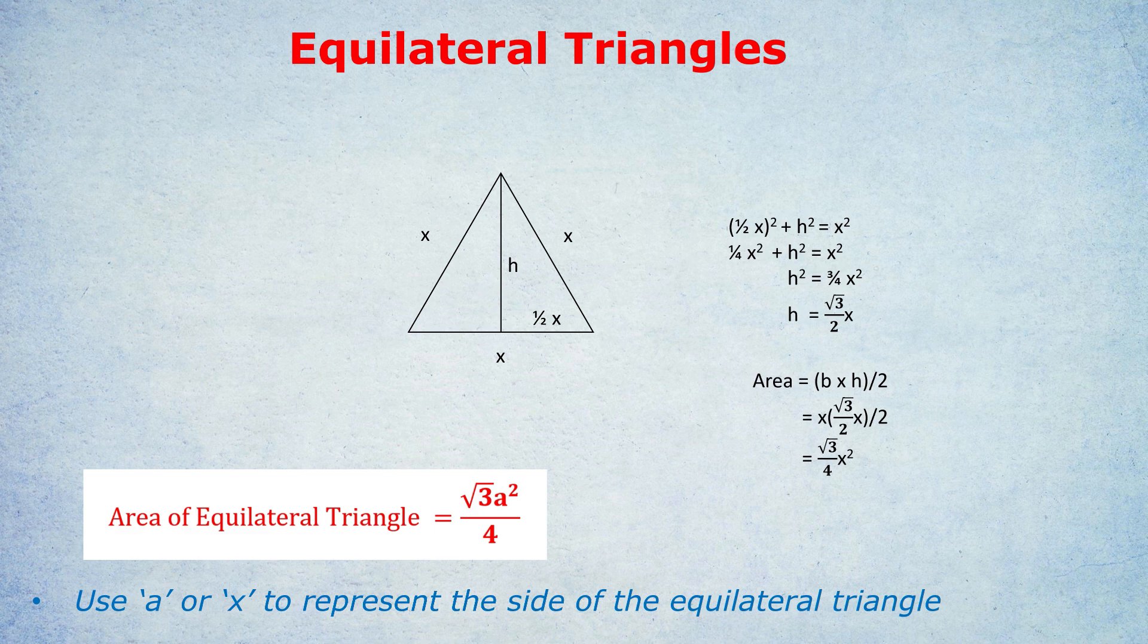Either way, we have now derived the formula that you can see on the left, except using a different letter for the side length. Root 3 over 4x² represents the area of any equilateral triangle.